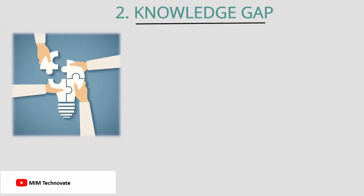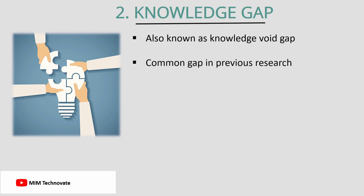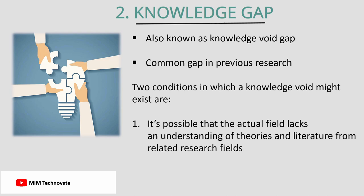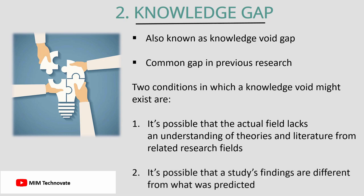Knowledge gap, also known as knowledge void gap, is a common gap in previous research. There are two conditions in which a knowledge void might exist. First, it's possible that the actual field lacks an understanding of theories and literature from related research fields. Second, it's possible that a study's findings are different from what was predicted.